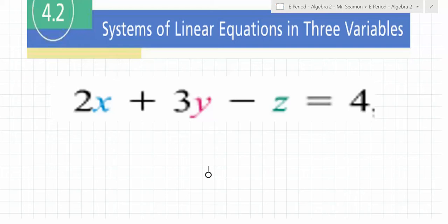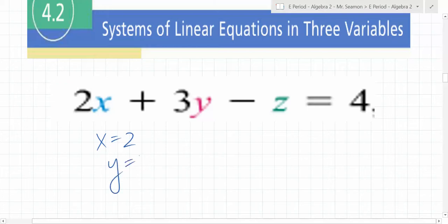We actually exist in three dimensions — there's horizontal, vertical, and forward/backward. To describe a point in space, you need all three. If I put a red dot on the floor, there are an infinite number of points above it. We are not graphing in three dimensions in this class. What we're going to do is take three equations and three variables and turn it into two equations and two variables. If x is 2 and y is 7, find z.